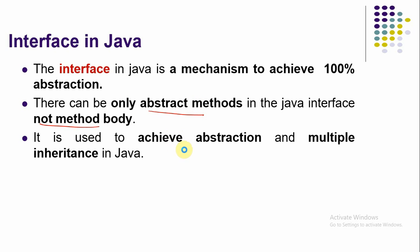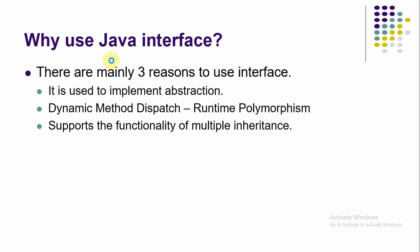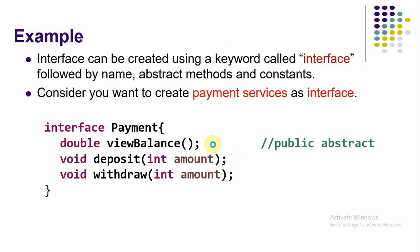Interface is used for implementing abstraction, and we can also use interface to implement the behavior of multiple inheritance using multiple interfaces, since multiple inheritance is not directly supported in Java. The uses of interface are: first, abstraction; second, dynamic method dispatch, which is runtime polymorphism; and third, implementing the flavor of multiple inheritance.